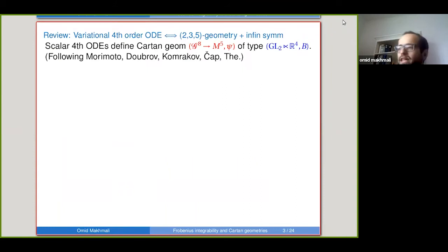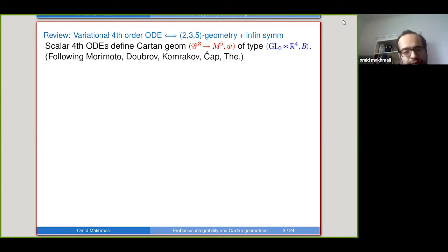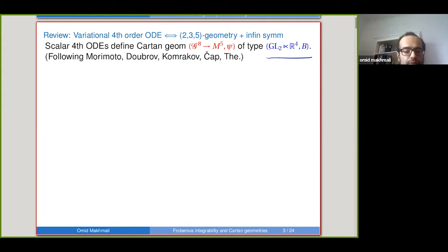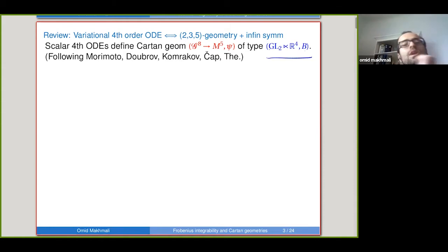Last time we finished by showing how variational fourth order ODEs are in one-to-one correspondence with 2,3,5 geometries with a choice of transversal infinitesimal symmetry. We start with a scalar fourth-order ODE. It's a Cartan geometry of this type where B is Borel inside GL2 — upper triangular two-by-two matrices — and these define some nice Cartan geometry using a recipe prescribed by Morimoto, Dukov, Kumrakov, Chep, and Teh.